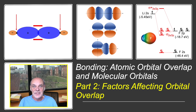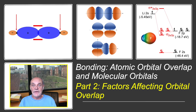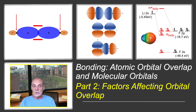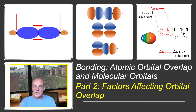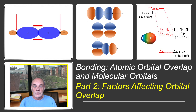This second video on orbital overlap and molecular orbitals describes how symmetry in shape, bond distance, and differences in electronegativity affect the overlap of atomic orbitals, and it also introduces non-bonding molecular orbitals. Using the examples of HF and LiF, we see how MO theory can describe bonding in both covalent and ionic materials. The video is aimed at providing a conceptual understanding of MO formation, presented at a level appropriate for a sophomore taking an introductory materials science and engineering class.